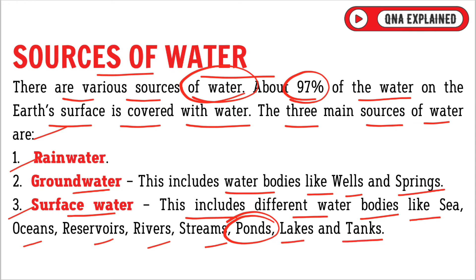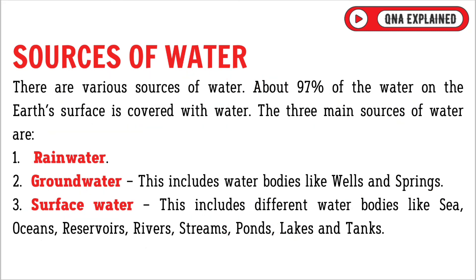So, the three main sources of water are rainwater, groundwater, and surface water.